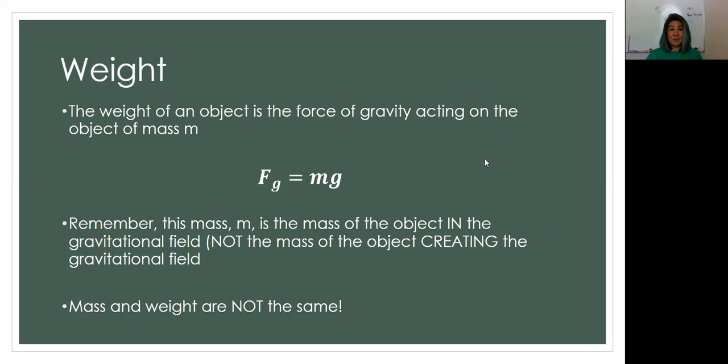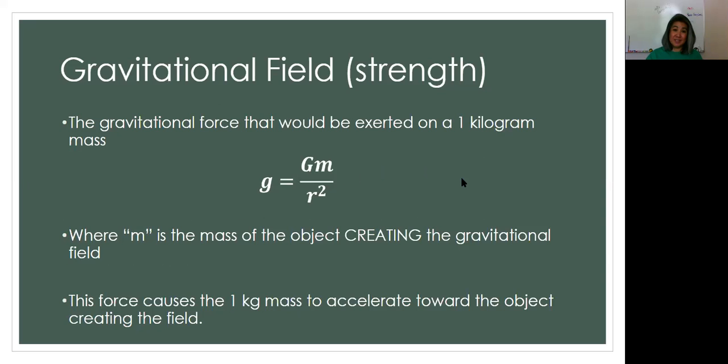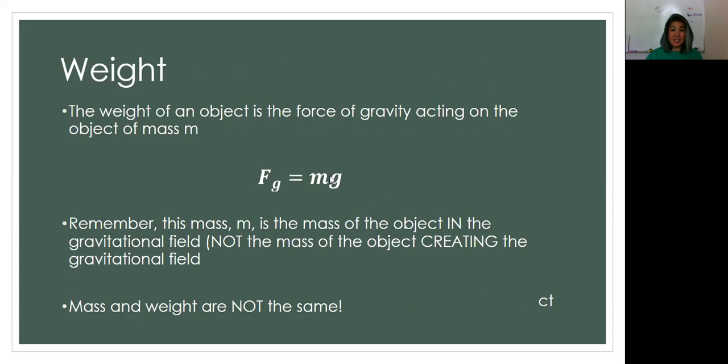So now remember, we can combine those two equations together and get a weight. Weight is the force of gravity that's acting on an object of mass m. And remember, this m is different from the last m in this equation. This m is different. This is the mass of the object creating the field in this equation. And this m is the object in the gravitational field.